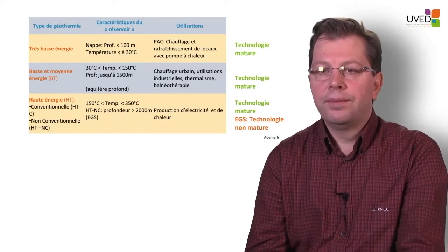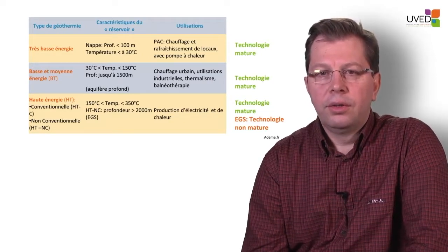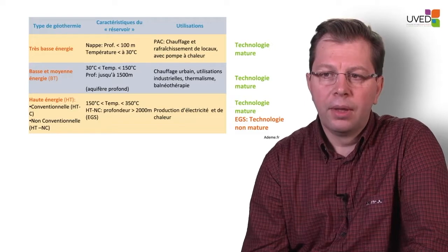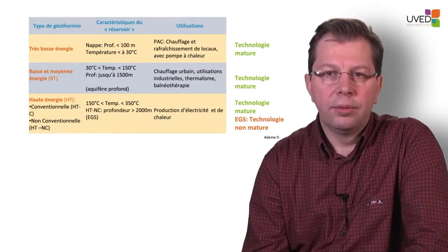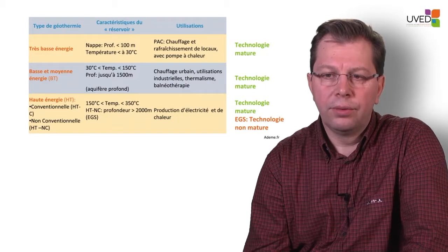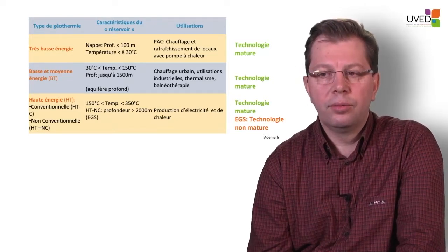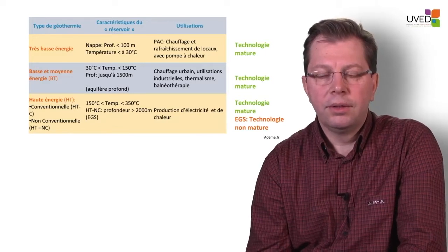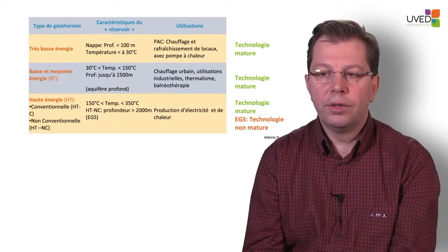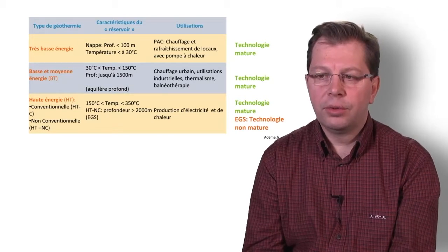Returning to the initial table to review the degree of maturity each technology has reached: for very low energy, the technology is fairly mature — we know how to do it and it's fairly reproducible. Low energy is also mature, with very good examples like systems in the Paris area that have been in operation for quite some time. For conventional high energy, where there is no need to change the environment, we have sufficient feedback to say the technology is mature. However, for non-conventional methods requiring environmental stimulation — especially EGS technology — we still have a lot of work to do before the technology can be called mature.